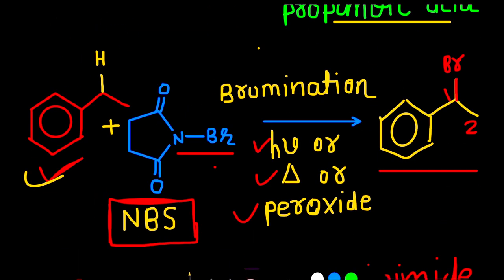The N-bromosuccinimide reagent is added into ethylbenzene in the presence of light or high temperature or radical initiator like peroxide. Then we get the product which contains bromine at an allylic position.